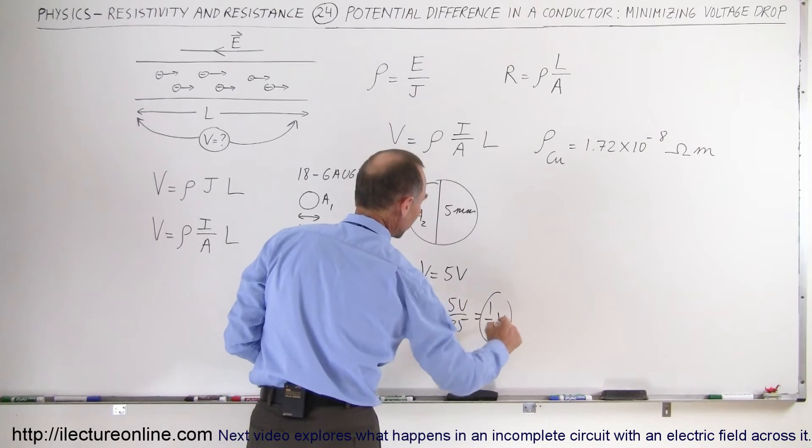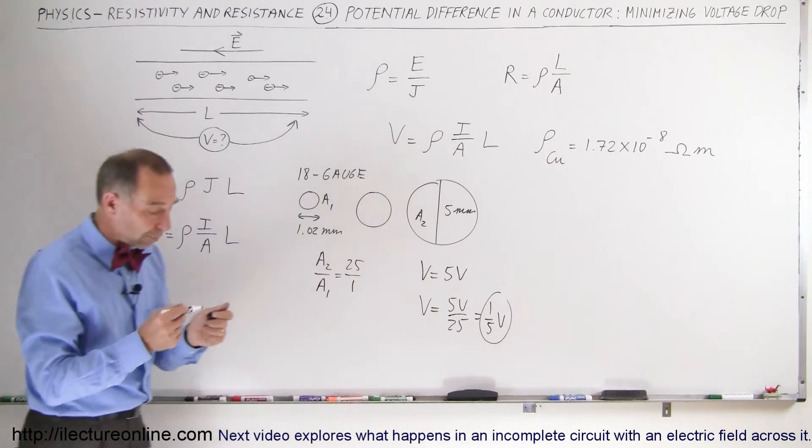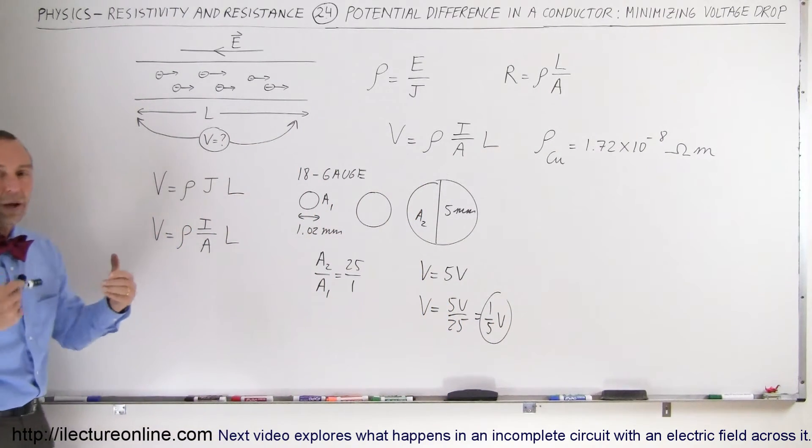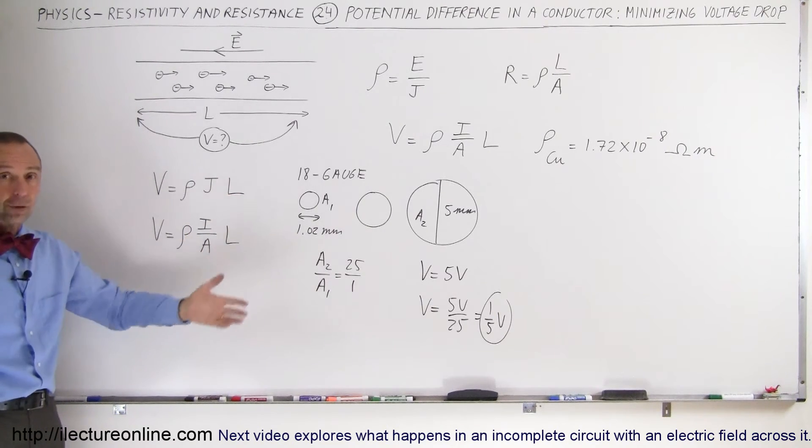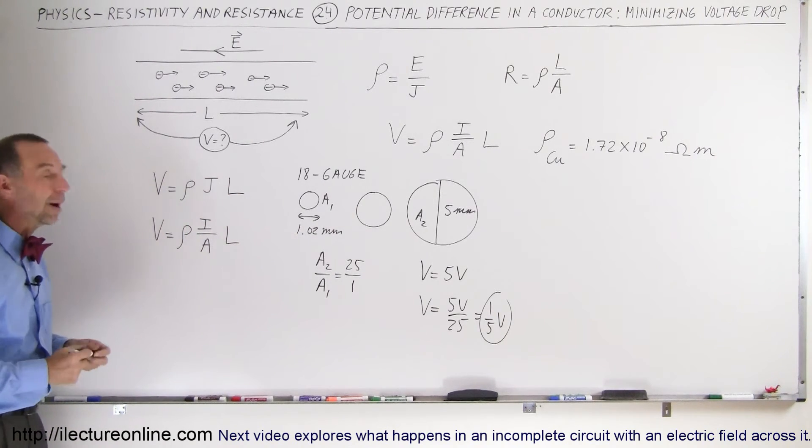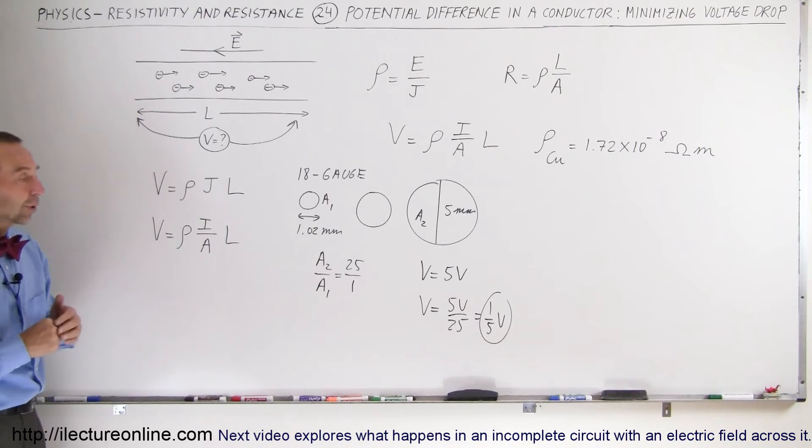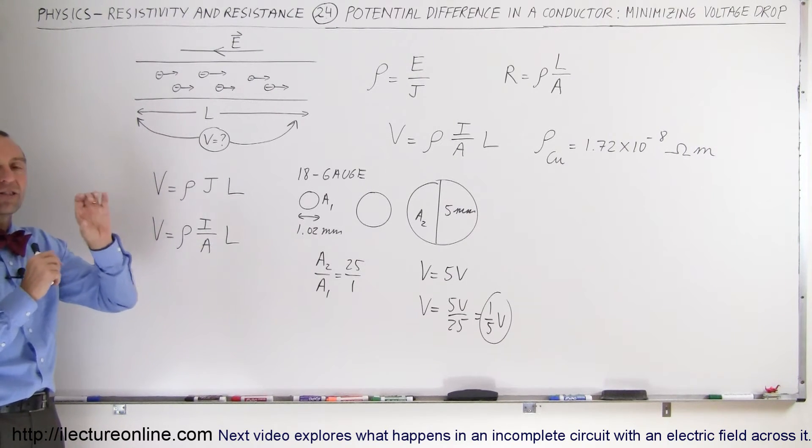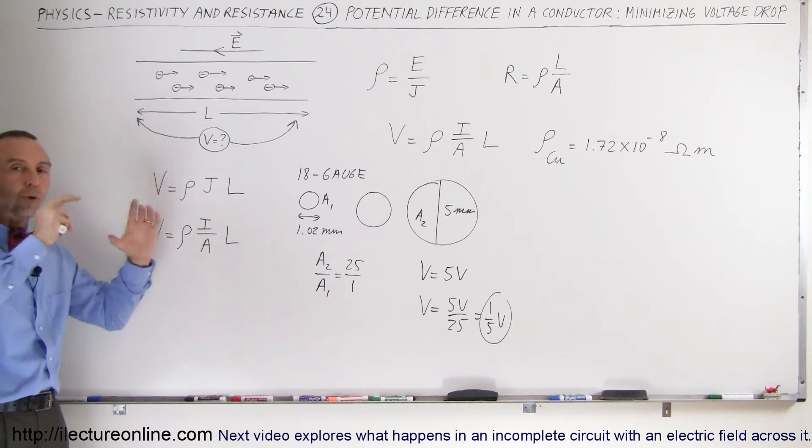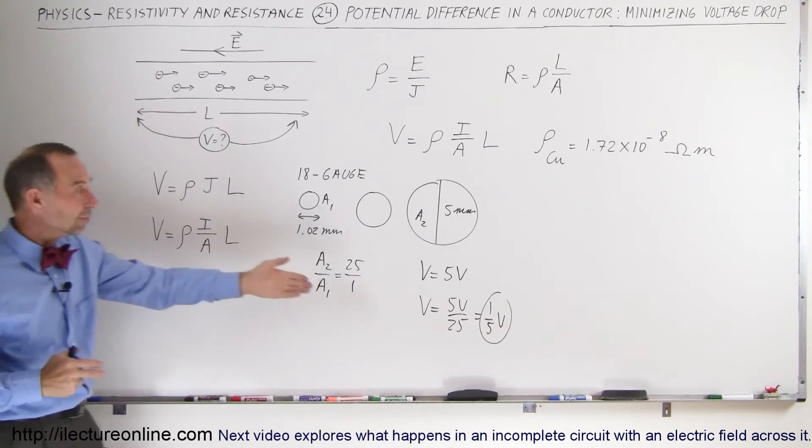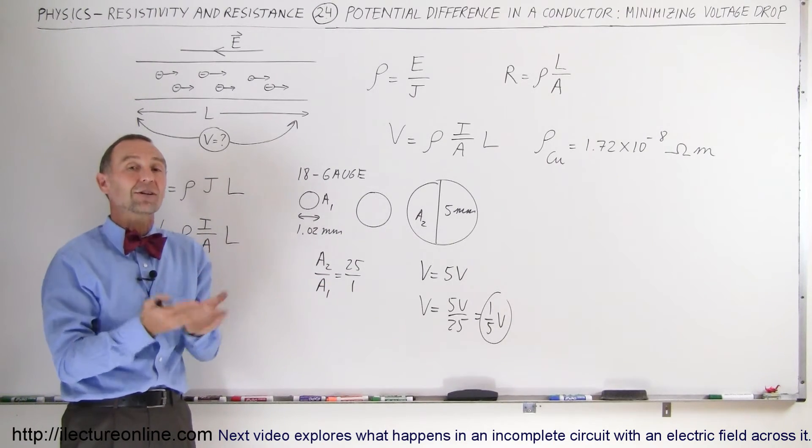You can see that makes a tremendous difference. Part of the construction of wires that carry current, for example, the high voltage lines that carry current from the power plants to the cities and to the factories where the electricity is needed, they use very thick wires. Not only that, they use multiple wires. If you have 10 of them, that means you have 10 times the cross-sectional area, a lot lower voltage drop.